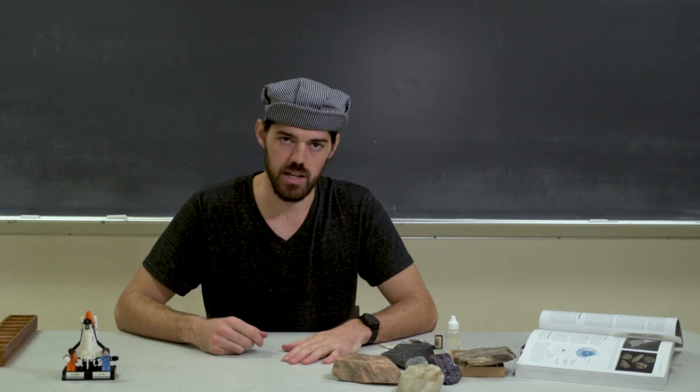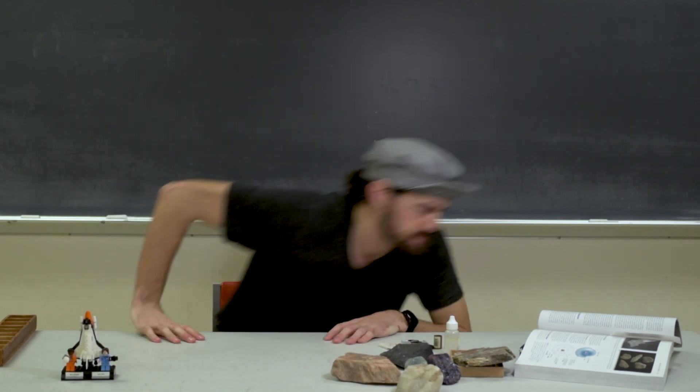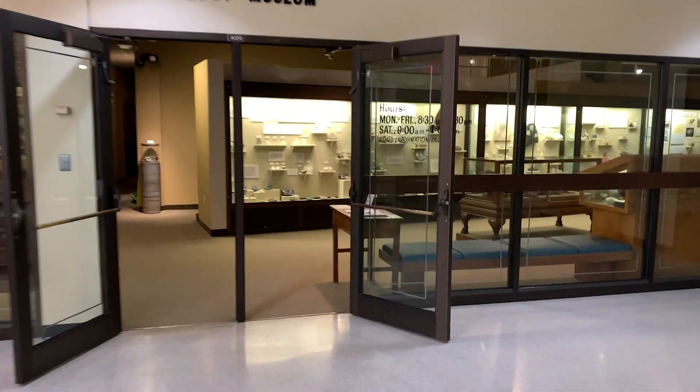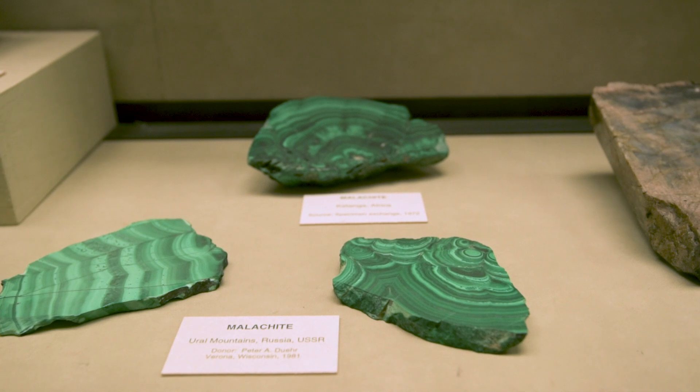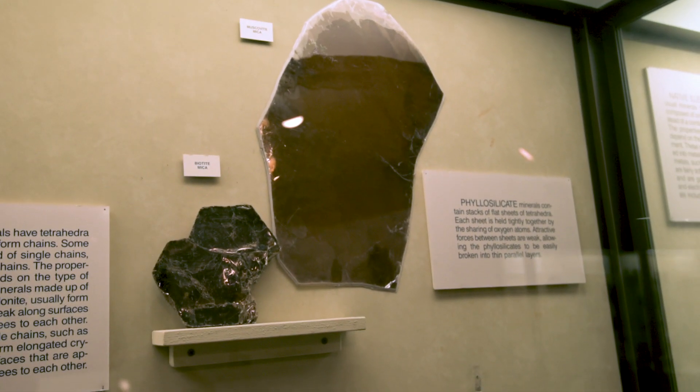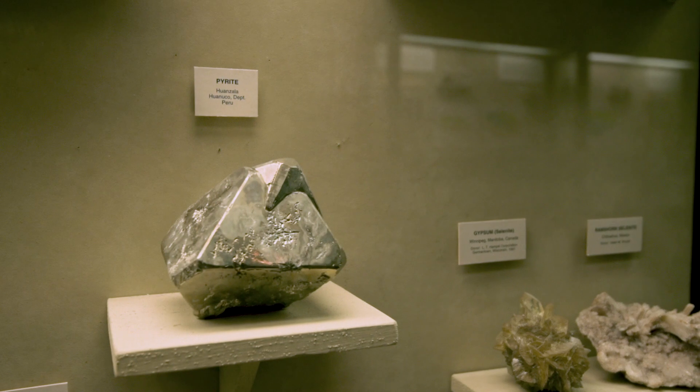Now that we've defined a mineral and know the difference between a rock and a mineral, I think it's time for a little field trip. As it turns out, University of Wisconsin here has a pretty awesome geology museum. You see how shiny it is? Geologists call that luster — how minerals interact with light. The face of the mineral and how it interacts with light is called luster. It's one of the diagnostic tools that geologists use to identify different minerals.